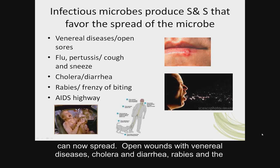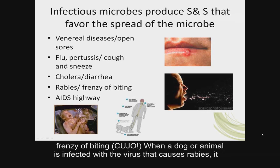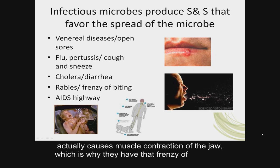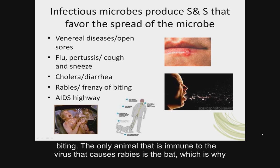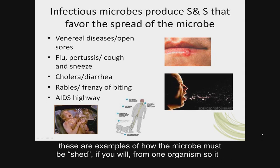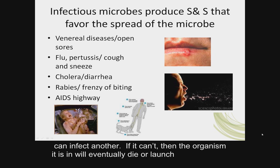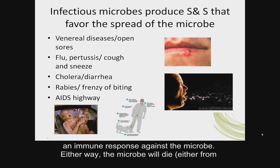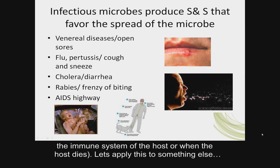When a dog or animal is infected with the virus that causes rabies, it actually causes muscle contraction of the jaw, which is why they have that frenzy of biting. The only animal immune to the rabies virus is the bat, which is why if a bat bites you, we worry about transmission of the virus. If the microbe can't be shed, the organism it's in will eventually die or launch an immune response against it. Either way, the microbe will die — from the immune system of the host or when the host dies.